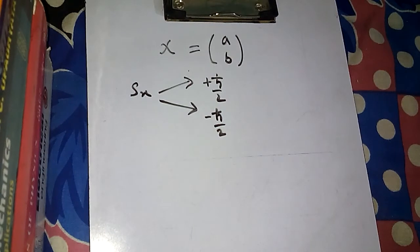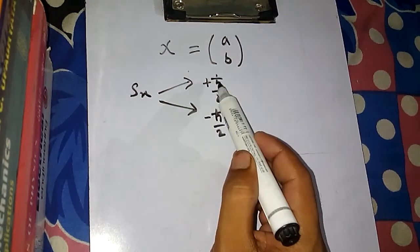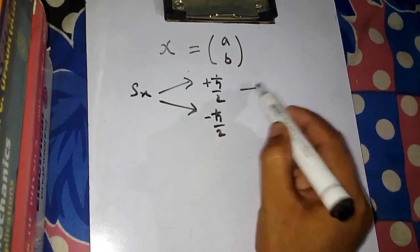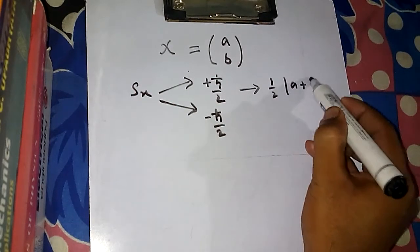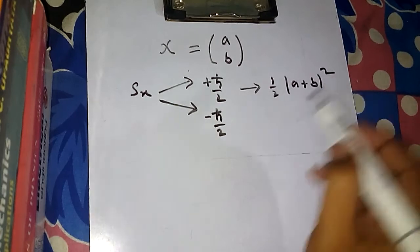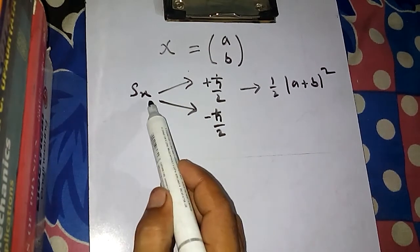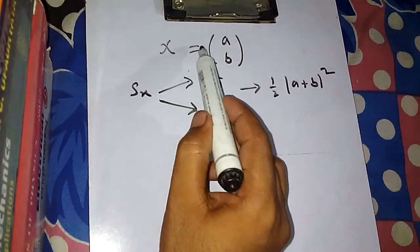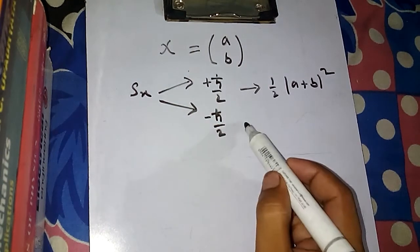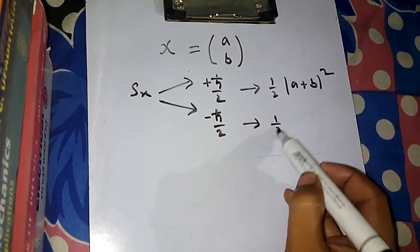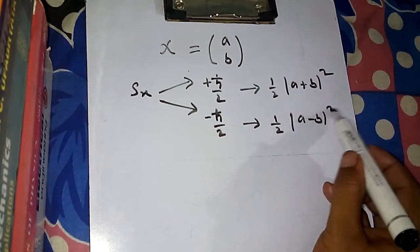What is the probability that you will get plus ℏ/2 when measuring S_x? That probability is given by (1/2)|a + b|². And what is the probability that you will get minus ℏ/2 when measuring S_x on this function? That probability is given by (1/2)|a − b|².